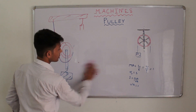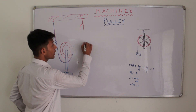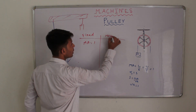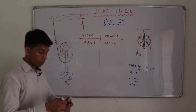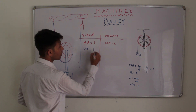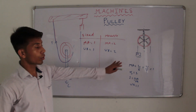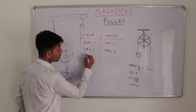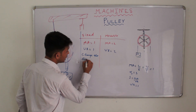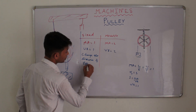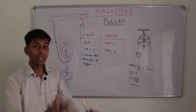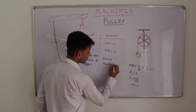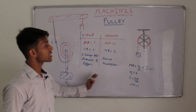We will have a comparison between single fixed and single movable pulley. For a single fixed pulley the mechanical advantage was 1, and for a movable pulley the mechanical advantage was equal to 2. The same is the case with velocity ratio: velocity ratio equals 1 for a fixed pulley and for a movable it was 2. A single fixed pulley is used to change the direction of effort — it allows us to apply effort in a convenient direction — whereas a movable pulley acts as a force multiplier.